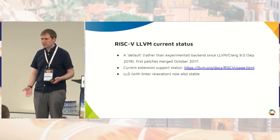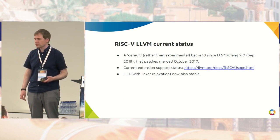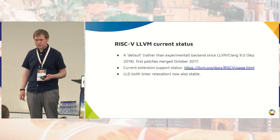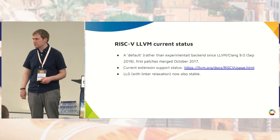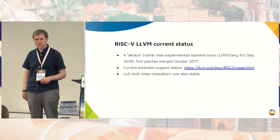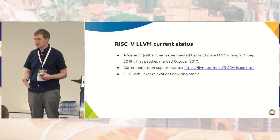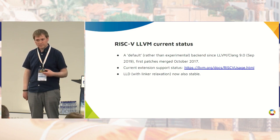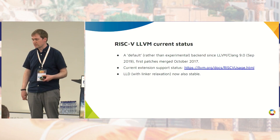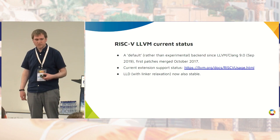In terms of where RISC-V LLVM is at, we've been a default rather than experimental backend since LLVM/Clang 9.0 back in September 2019. I initiated that upstream RISC-V LLVM effort starting a bit before October 2017. It took a few months to get the initial series of patches up and running, then about two years from there to go from something not turned on by default to demonstrating it could build a large corpus of Linux user space applications, SPEC, GCC torture suites, and so on.